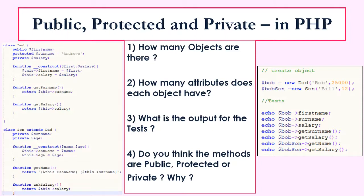Hopefully you've answered the questions. Let's go through them together. How many objects are there? Well, there are two objects. The first object is called 'dad' and the second is called 'son'. The 'extends' keyword means there is inheritance going on — some attributes from 'dad', based on access rights, will be passed down into the 'son' class. The dad object has three attributes: first_name, surname, and salary.